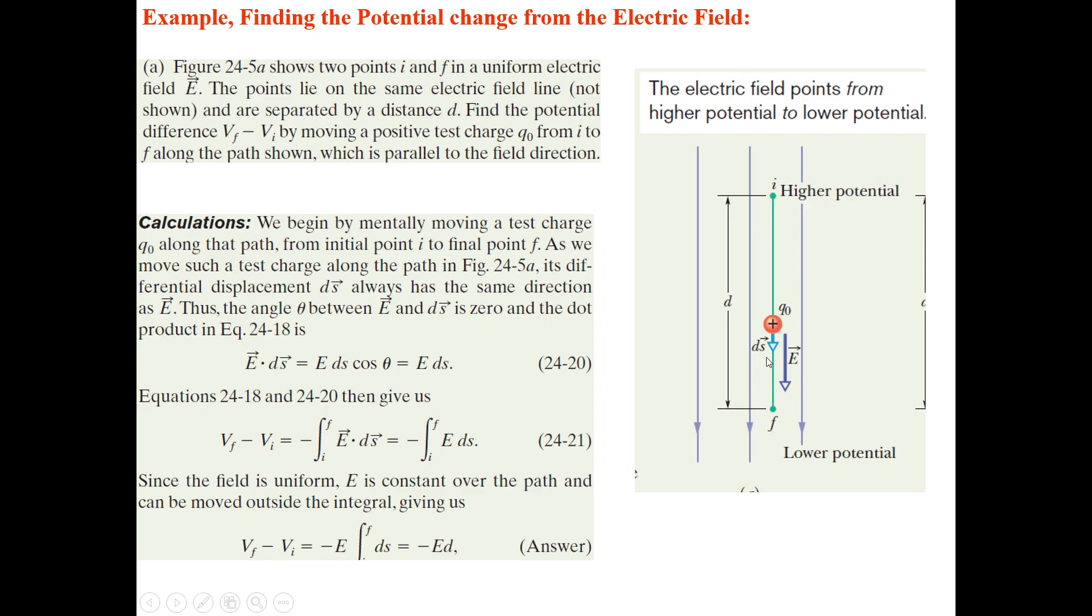Any straight path, direct path we want to find out from any initial point to the final point. In this case, because I and F, this direction is downward. Electric field is downward and the question is that both...